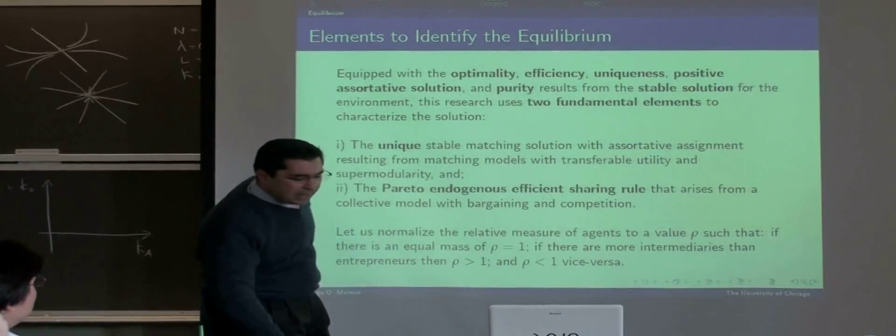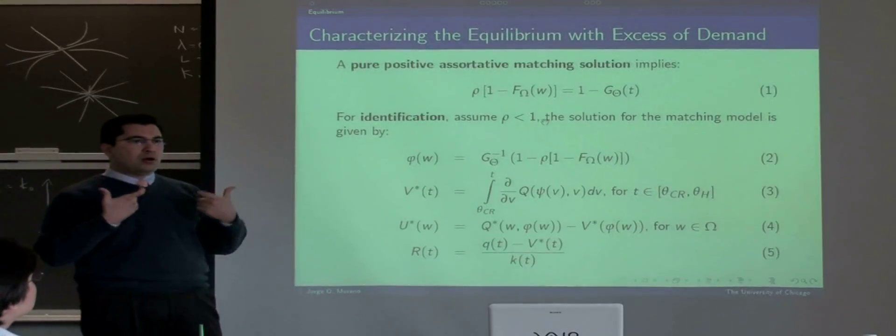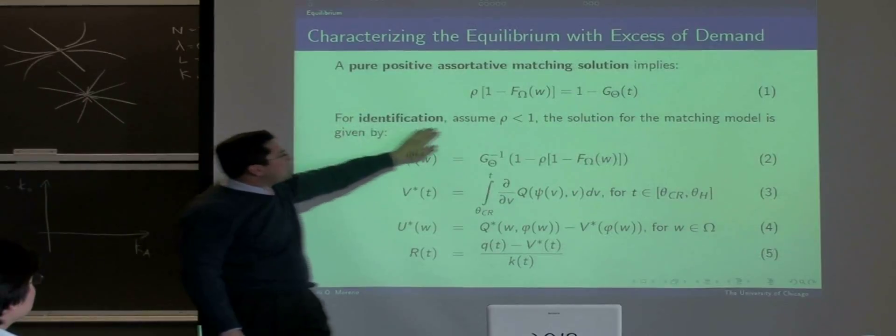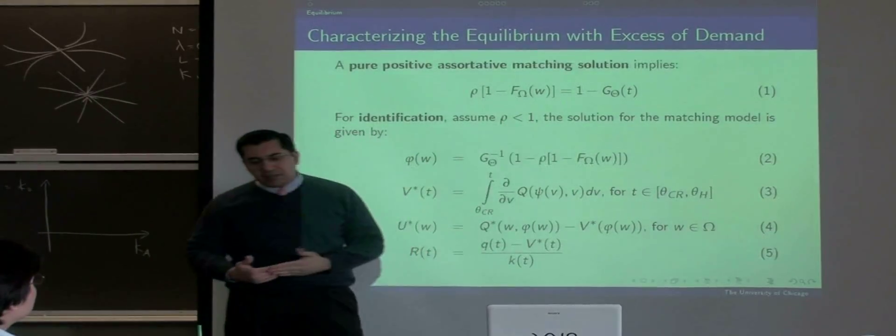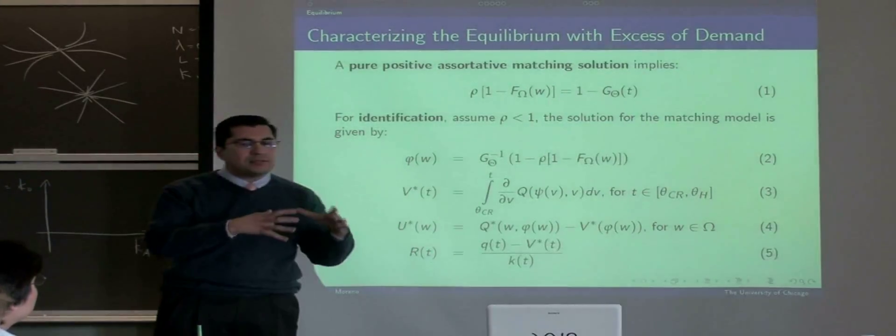What this rho is allowing me to do is to have identification of the solution of the prices, which is the interest rate. If we have this rho lower than one, that means that we have more entrepreneurs than banks in terms of the density.